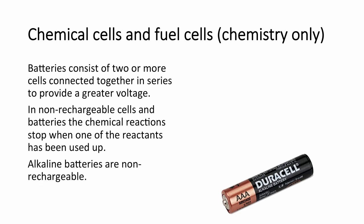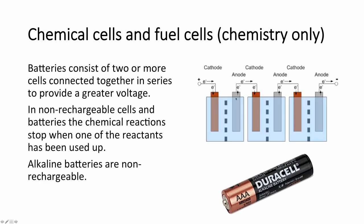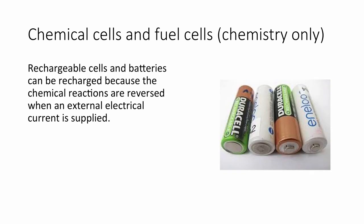Batteries consist of two or more cells connected together in series to provide a greater voltage. For example, if each cell was 1.5 volts, the battery would be 4.5 volts. In non-rechargeable cells and batteries, the chemical reactions stop when one of the reactants has been used up. Alkaline batteries are non-rechargeable. Rechargeable cells and batteries can be recharged because when the energy is being used up and transferred into the circuit, we can recharge them by reversing the cell by applying an external electrical current.